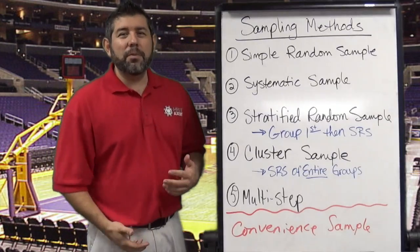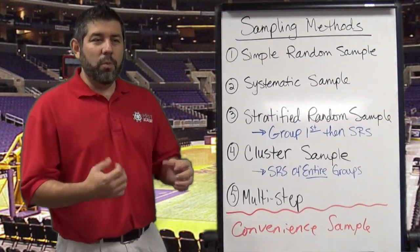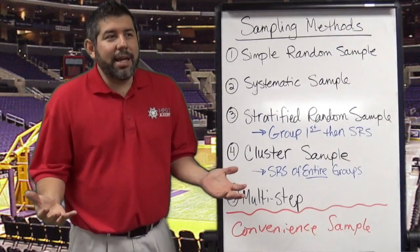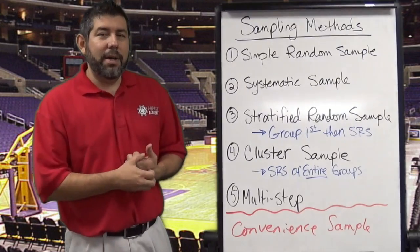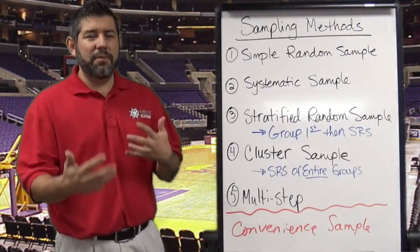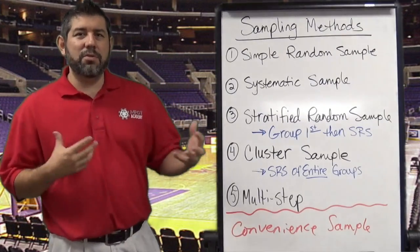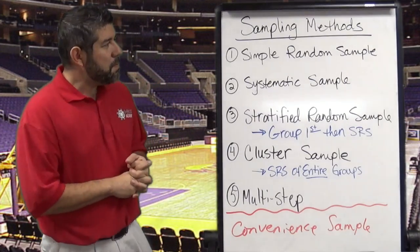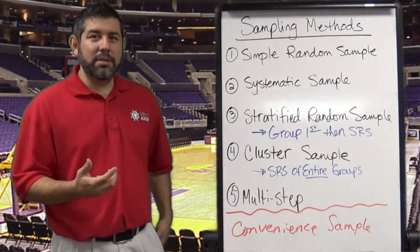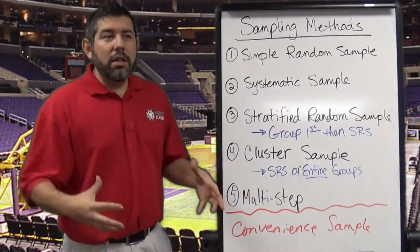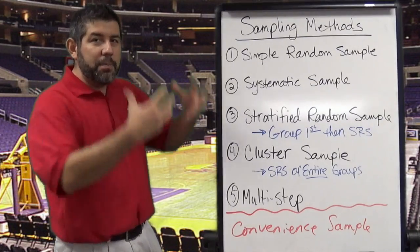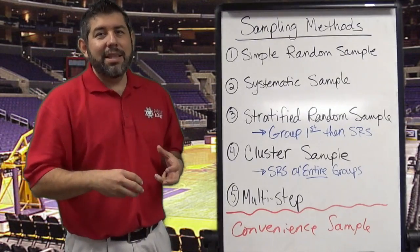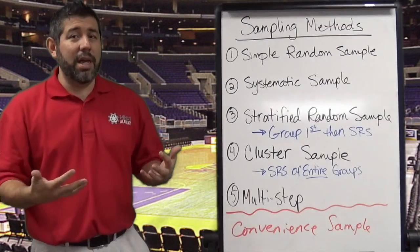The only problem with a simple random sample is sometimes you might get one group over-represented — like it could happen that I get all the Lakers in my study, and that might not help because there are different things going on in different cities. Different cities attract different people. Also, a problem with simple random sample is you need to know all of the population so you can number everyone to get the sample, and that often takes a lot of time and money.